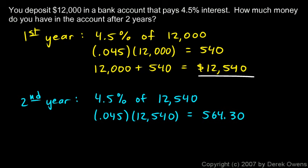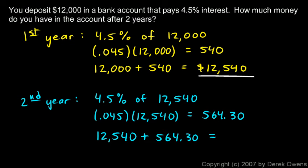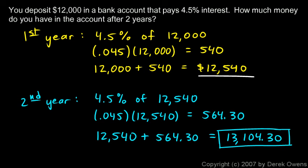At the end of the second year, we take the amount of money we had at the beginning of that year — twelve thousand five hundred and forty — and add the interest earned for the second year, which is five sixty-four thirty. That gives us the total amount we have at the end of two years: thirteen thousand one hundred and four dollars and thirty cents.